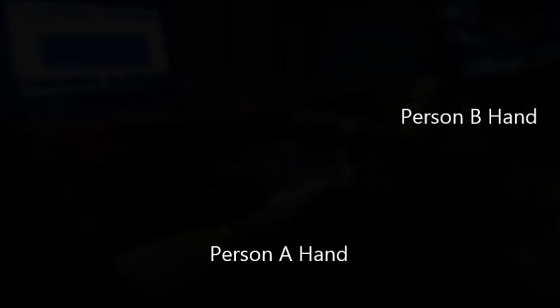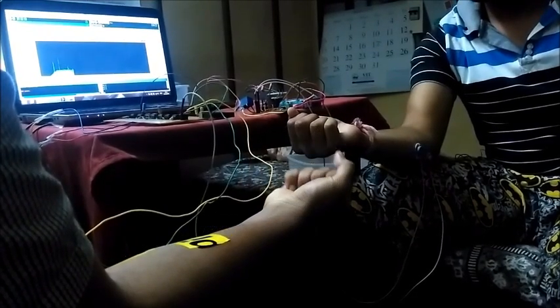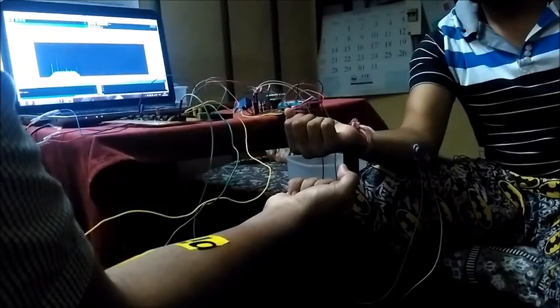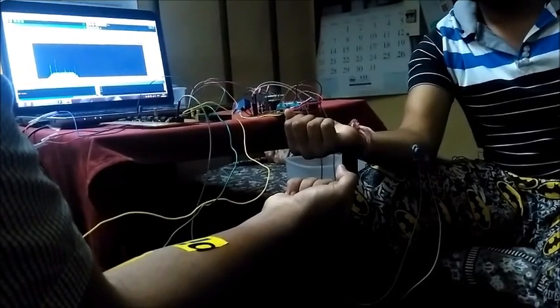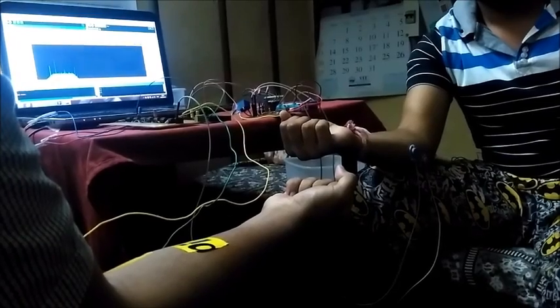When person A is flexing, the value in the graph is increasing and when the value crosses the threshold value of 500 V, the signal regenerating circuit is activated and the electromyogram signal is successfully transferred to person B. Now let's see the demonstration.